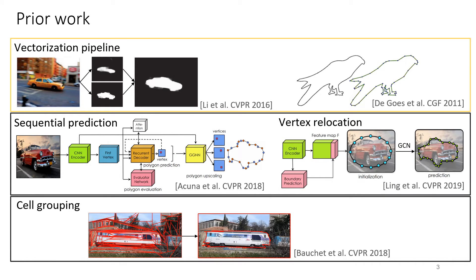A popular strategy for object polygonalization consists in extracting pixel chains from semantic segmentation and simplifying them into polygons. Their output can easily drift from object silhouettes.